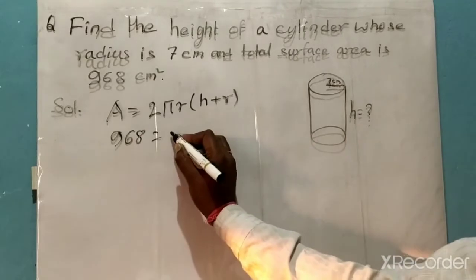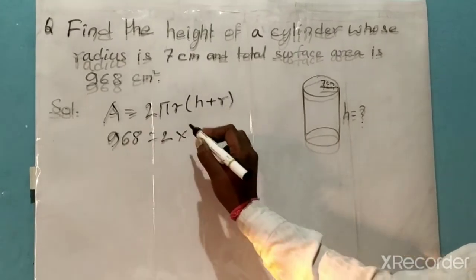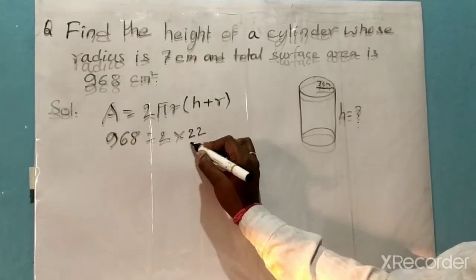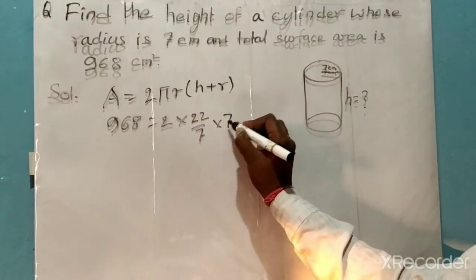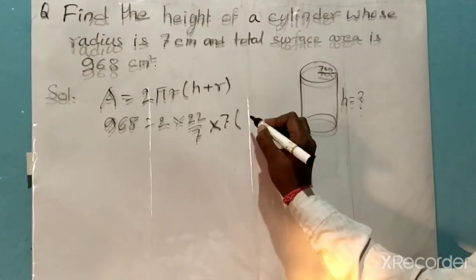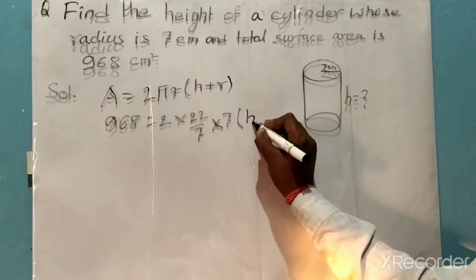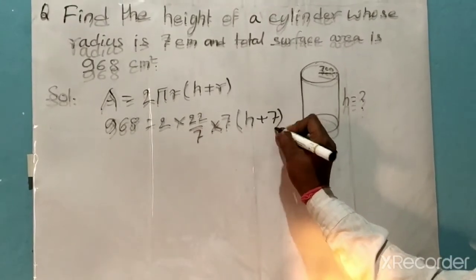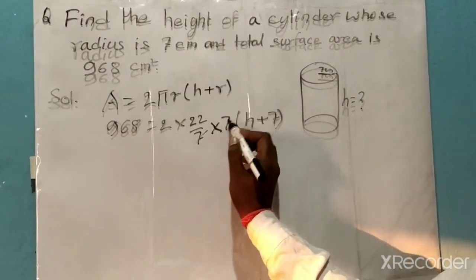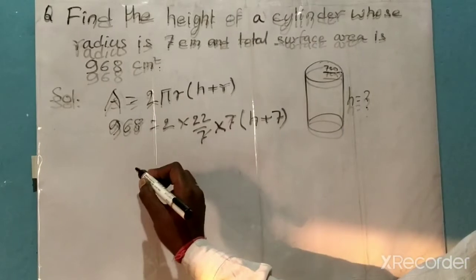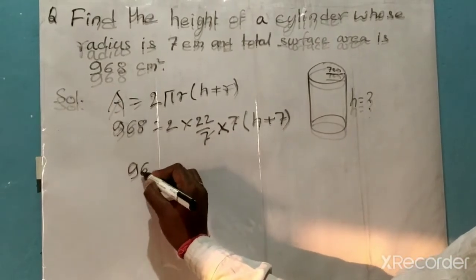968 = 2 × π × r × (h + r). Pi is 22/7, r is 7, so: 968 = 2 × (22/7) × 7 × (h + 7). The 7s cancel, giving us 968 = 2 × 22 × (h + 7).